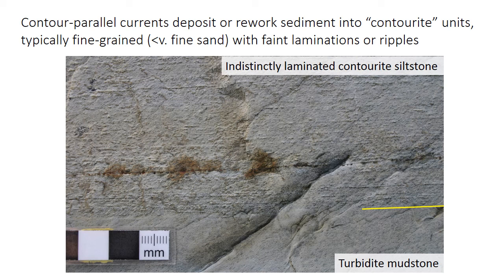Deep sea currents on continental slopes often flow parallel to the slope — contour parallel — because of the Coriolis force. These contour parallel currents produce distinctive deposits called contourites, the equivalent of turbidity currents producing turbidites. Because the flows are weak — only around 10–20 centimeters per second — grain size is usually mud, silt, or perhaps very fine sand. The most typical sedimentary structures are faint, discontinuous laminations formed by little strings of slightly coarser particles. Ripples may be present if the flow is more energetic, and their paleocurrent direction will be perpendicular to that measured in a downslope-flowing turbidite.